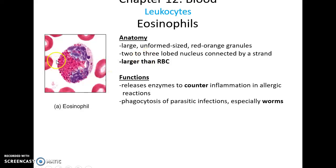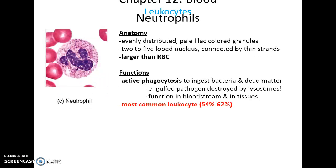Eosinophils have large orangish-red granules in their cytoplasm and a two-to-three-lobe nucleus; they are larger than red blood cells. They release enzymes to counter inflammation, especially in allergic reactions. They can also attack parasitic pathogens infecting the body, especially large things like parasitic worms.